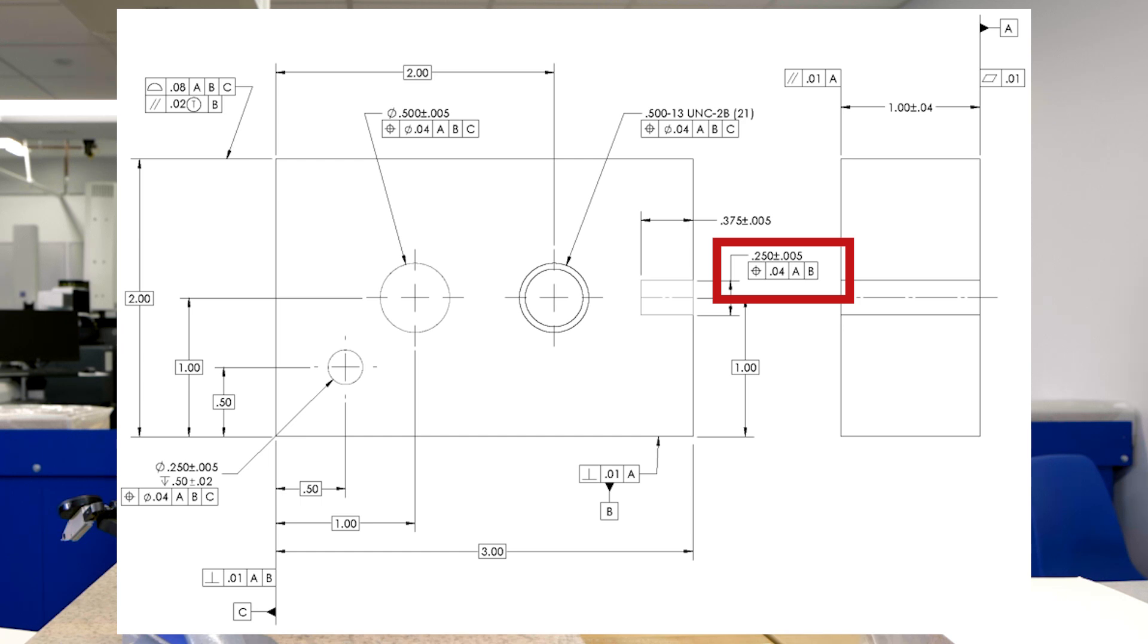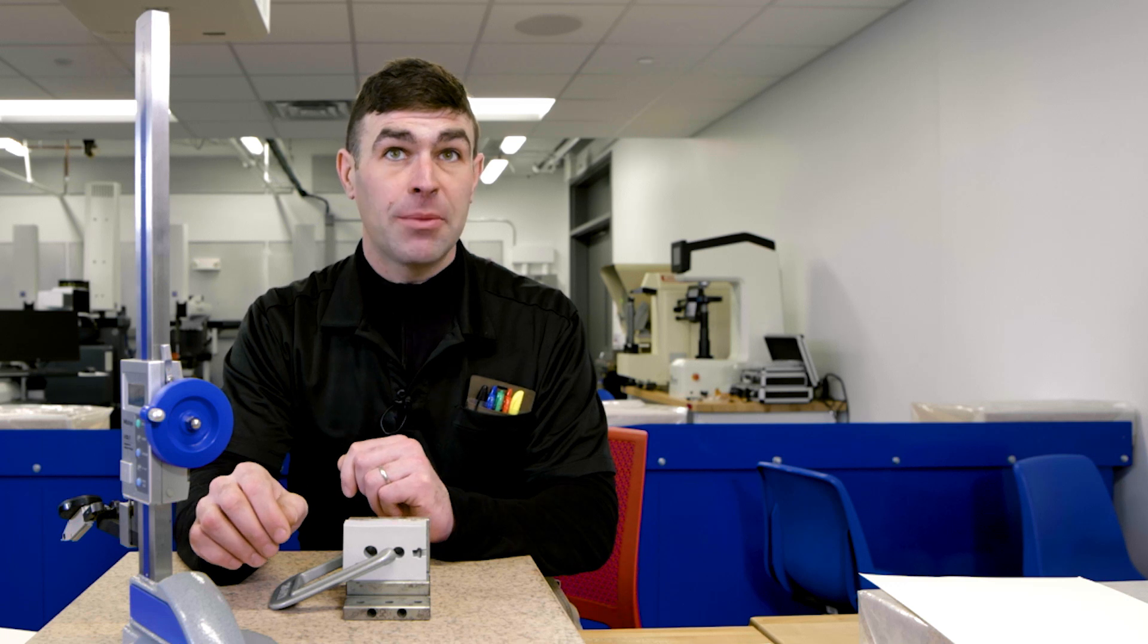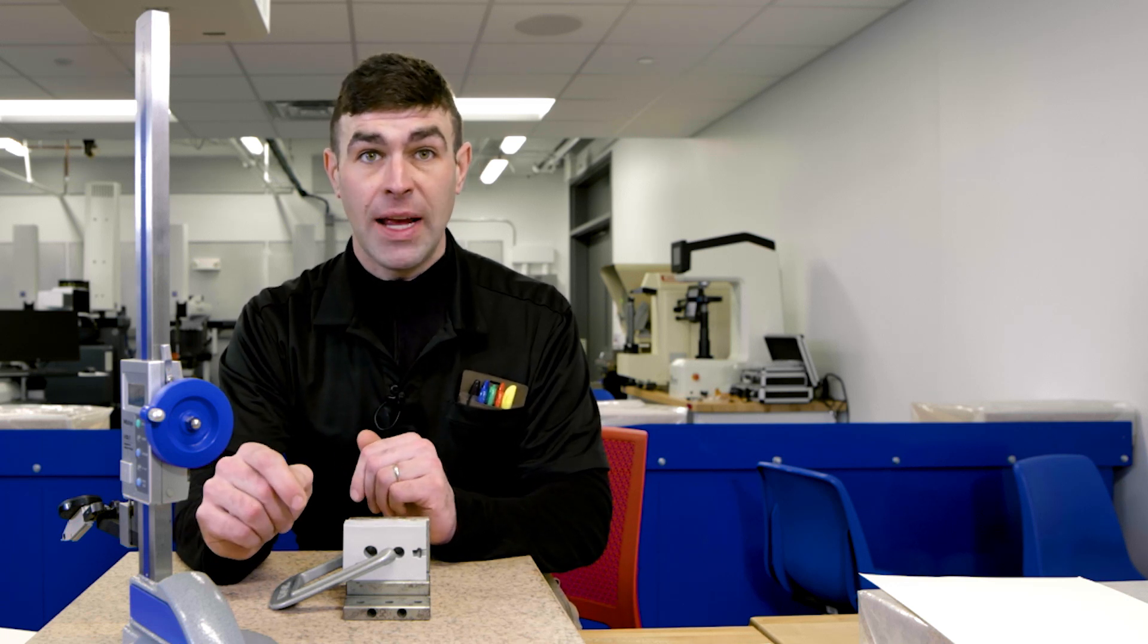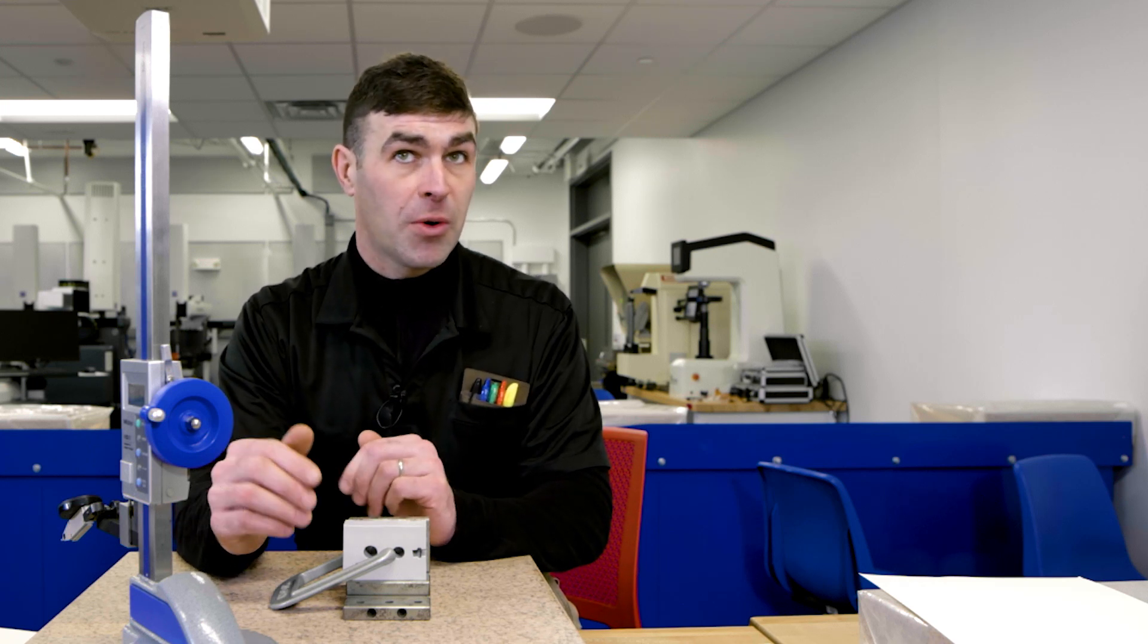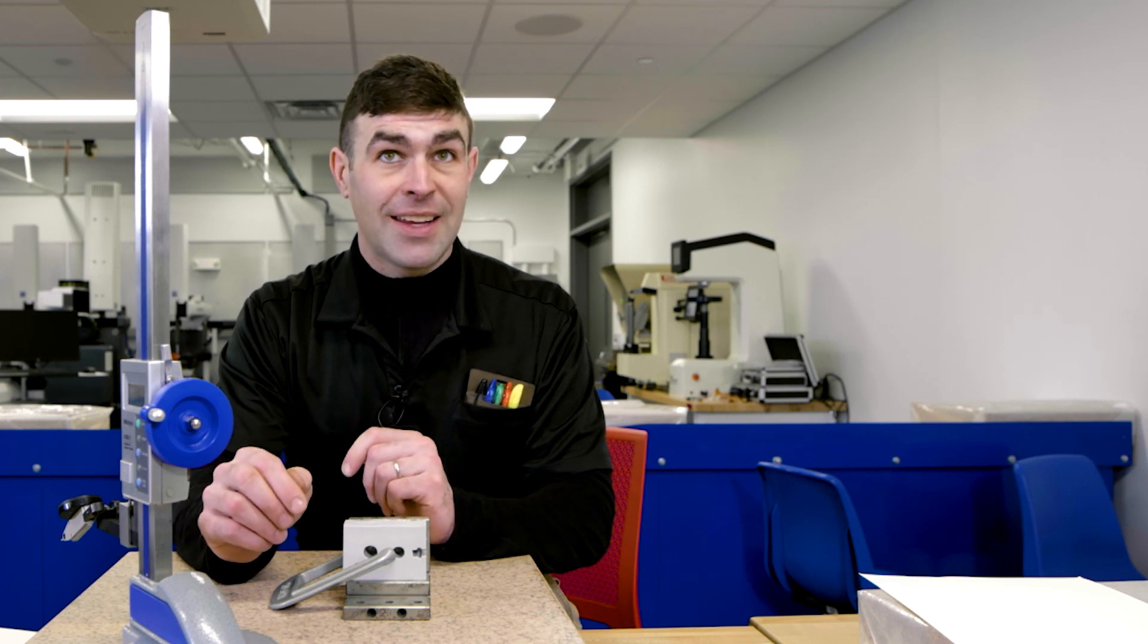Now, you might ask, where's datum C? We're controlling position, right? In this case, we actually do not need a datum C because of the degrees of freedom that A and B take away. Datum C could be in the feature control frame. It wouldn't hurt, but it doesn't affect our design or measurement in this case.